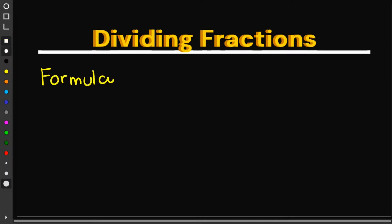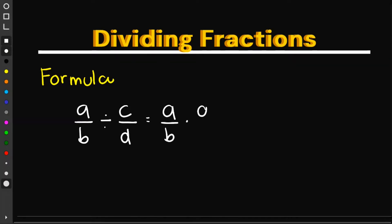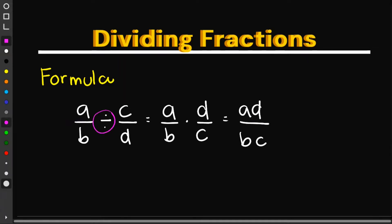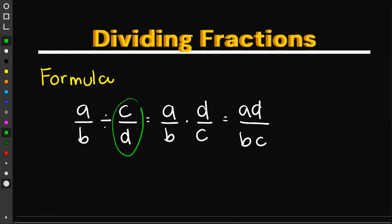The formula for dividing fractions is given by a over b divided by c over d. This is equal to a over b times d over c, which equals ad over bc. What we did here is convert the division symbol into multiplication, and we also converted c over d into d over c, or its reciprocal. So basically, when we divide a fraction, we multiply it by its reciprocal. Please take note of this formula.